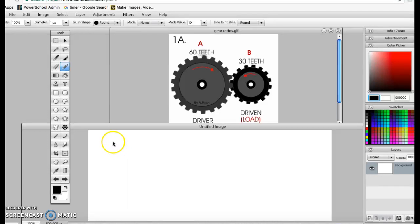Alright, so we're going to talk about how to calculate torque and what happens to the torque and speed of a gear mesh when a certain gear is the drive gear and another gear is the driven gear. If we look at our picture here, we have gear A which has 60 teeth, and we have gear B which has 30 teeth.